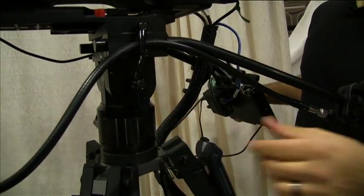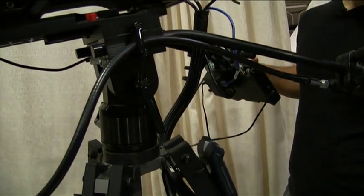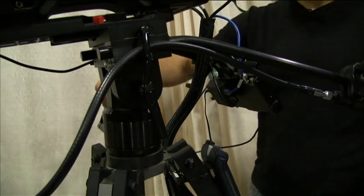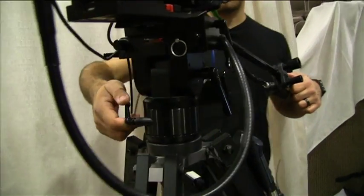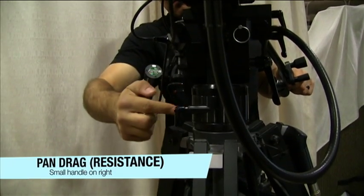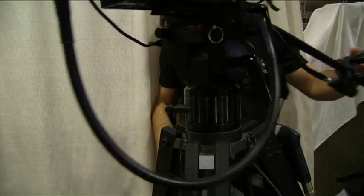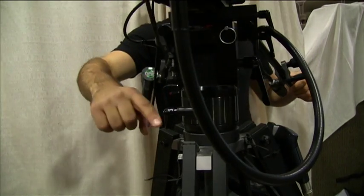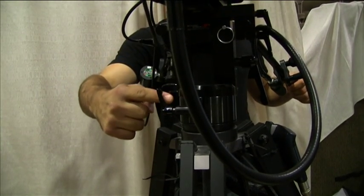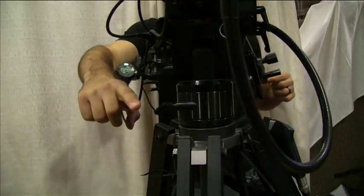Not enough drag will make the camera motion feel too loose. Too much will make it feel too stiff. To adjust the pan drag or the left to right motion, use the handle on the operator's right. As every operator has different preferences, make sure the amount of drag is comfortable for you.